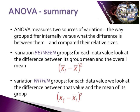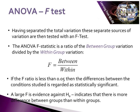In summary, an ANOVA measures sources of variation in two ways: how groups differ internally versus the differences seen between them, and then compares the relative size of these two levels of variance. It looks at variation between groups — for each data value, the difference between its group mean and the overall mean. It also looks at variation within groups — for each data value, the difference between that value and the mean of its group. So we look at both the between and within variance.